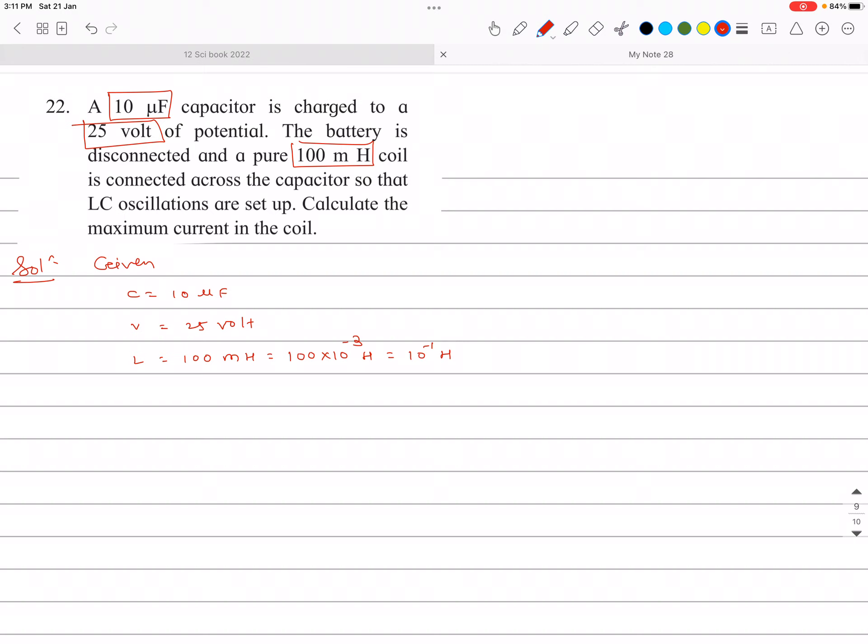Is connected across capacitor so that LC oscillations are set up. Calculate the maximum current. Listen, in LC oscillations, electrostatic energy stored in the capacitor is converted into magnetic field energy and vice versa.